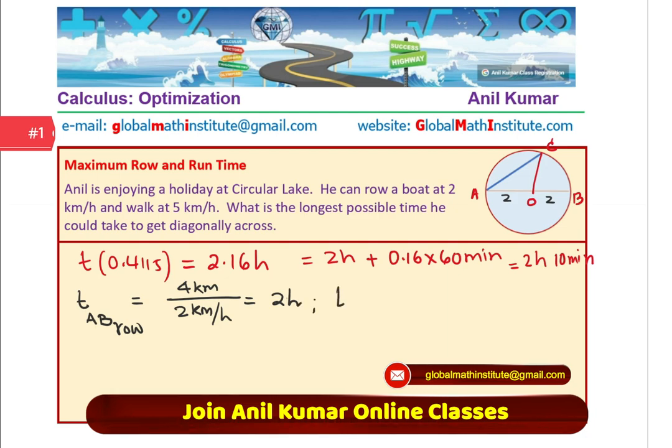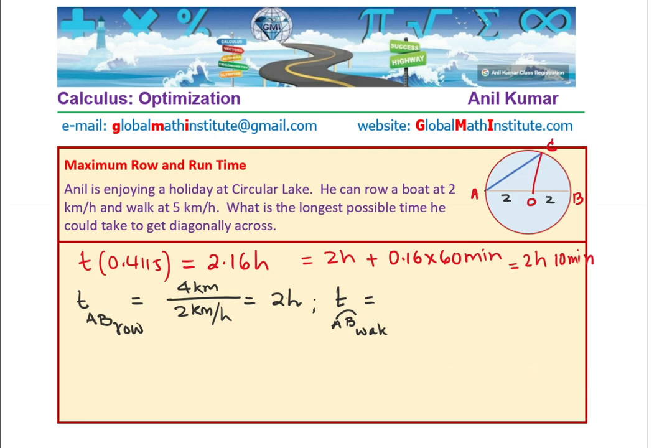And if you want to calculate the time when you walk all the way, A to B walking time, this length is semicircle, so pi r, r being 2 and the speed being 5 kilometers per hour. We get 1.25 hours. Since walking speed is pretty high, it is very less time. We are looking for maximum time.